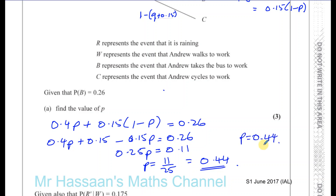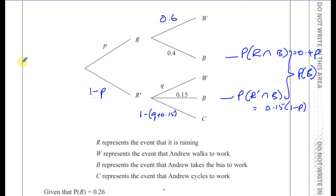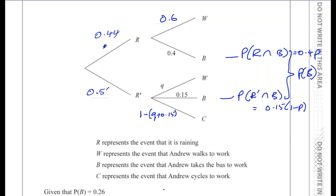Now we've found P, let's incorporate that into the tree diagram. So this branch is 0.44, and 1 minus 0.44 gives us 0.56 for the other branch. They add up to 1.